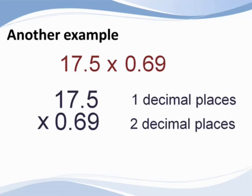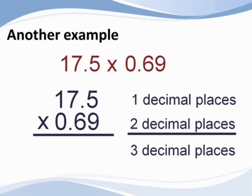Sixty-nine hundredths has two numbers to the right of the decimal. Therefore, in total, there are three decimal places that have to appear in the product.